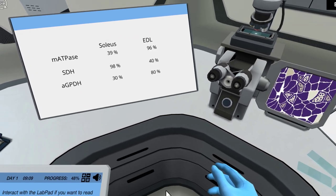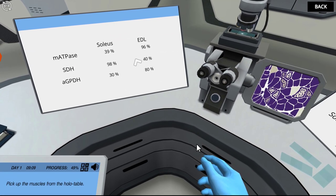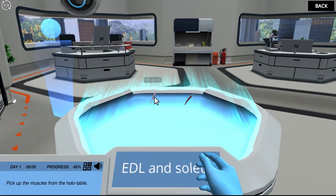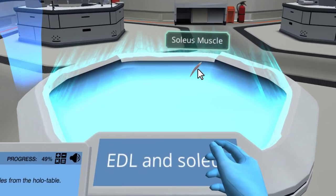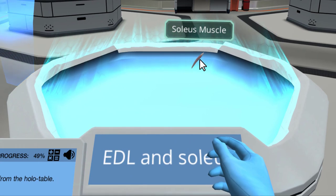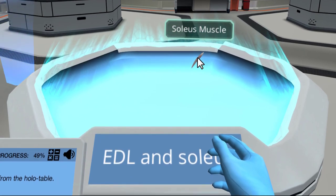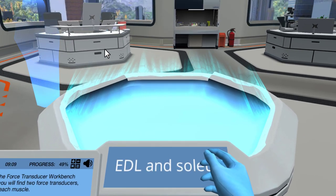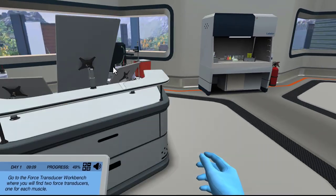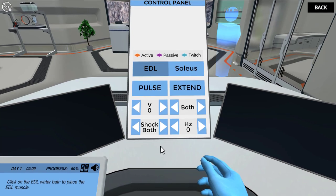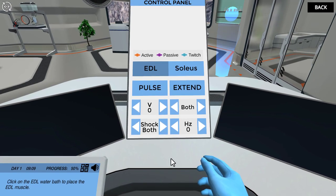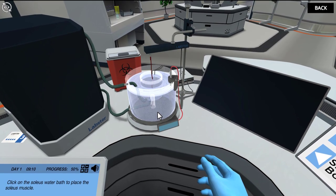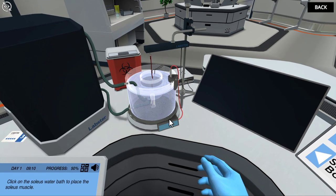It is time to test the responses of the muscles to different stimuli. First, you need a new set of muscles. You have collected a new fast twitch EDL muscle. Now collect the slow twitch soleus muscle. Now that you have both muscles, it is time to attach these to a force transducer. Go to the force transducer. Click on the EDL water bath to place the EDL muscle. Click on the soleus water bath to place the soleus muscle.